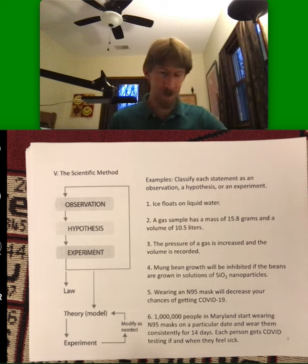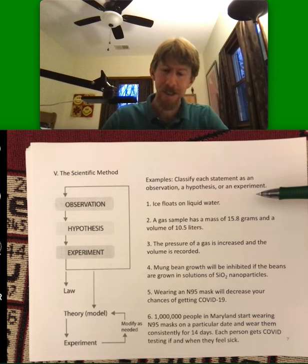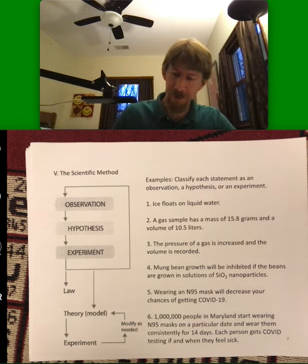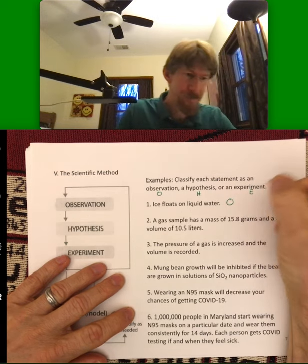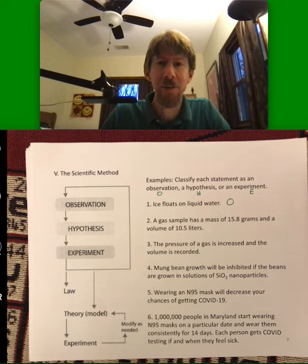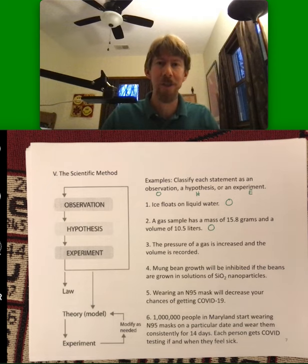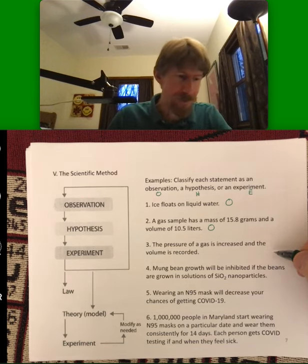Now some examples. And we're going to stick to observation, hypothesis, or experiment for these. So ice floats on water. That's an example of an observation. So I'll put O after it for observation, so O, H, and E. A gas sample has a mass of 15.8 grams and a volume of 10.5 liters. That is an observation as well. You're just stating facts, so things that are occurring, or that you can see, that you can measure.